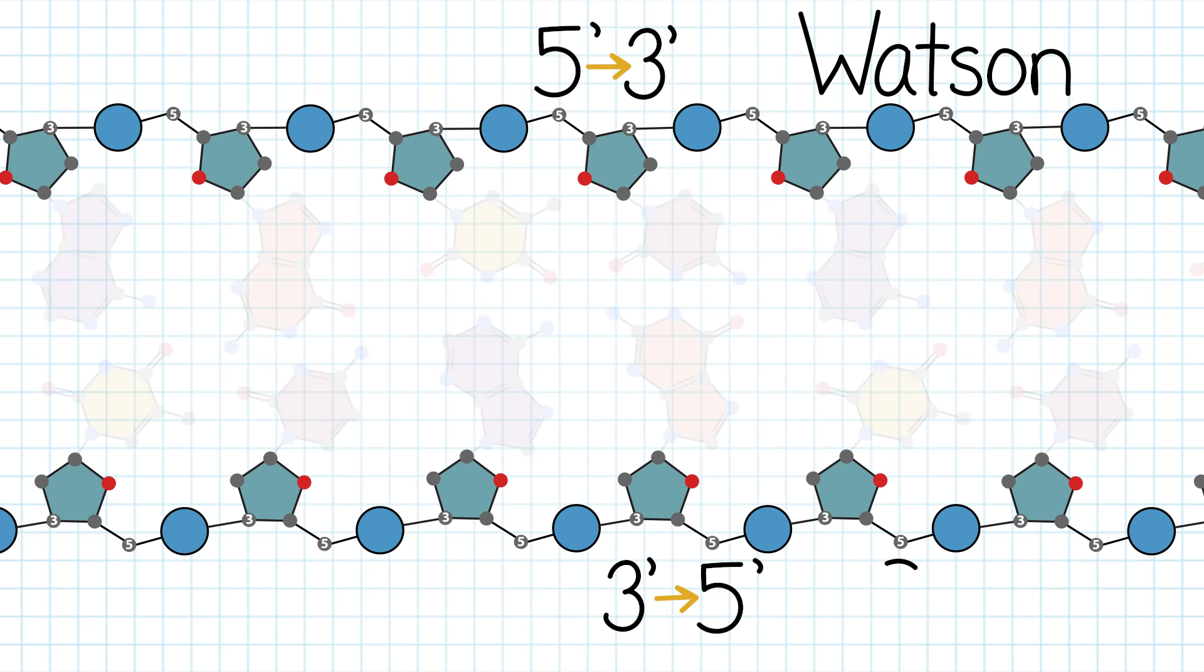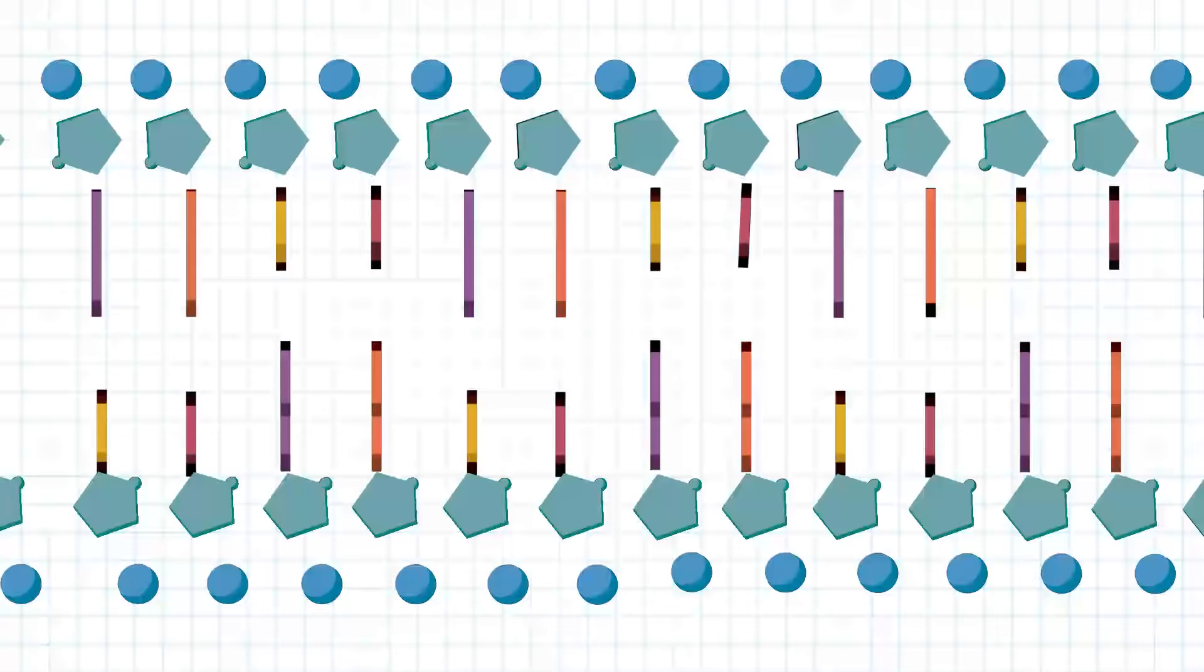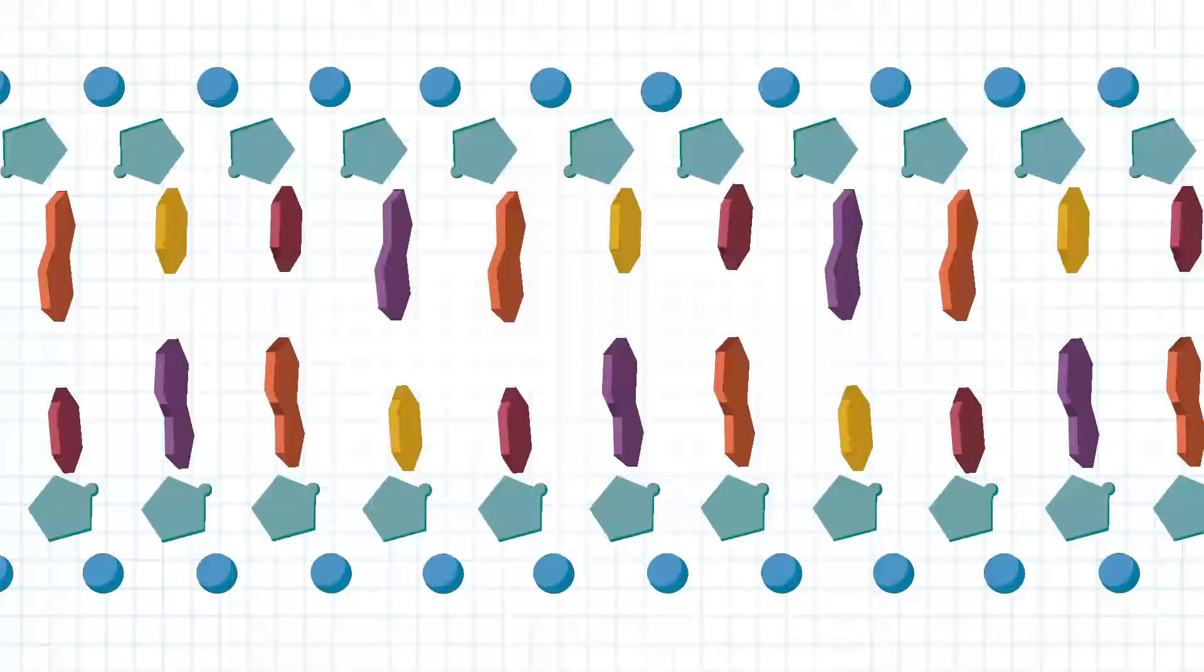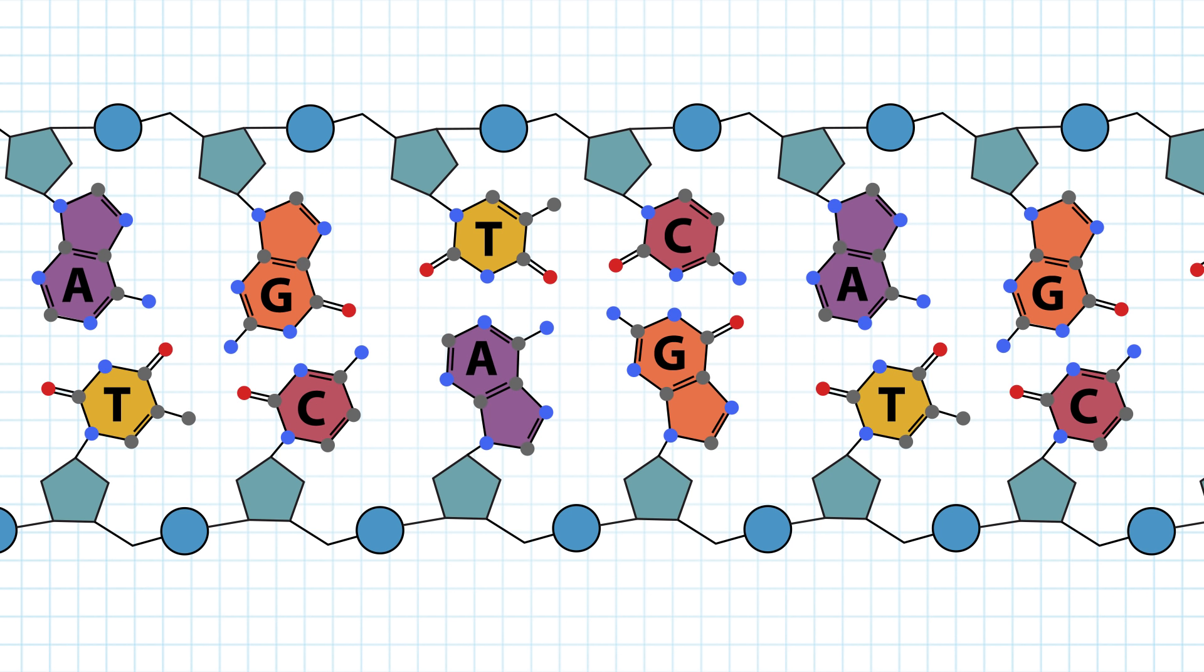These strands are also sometimes called Watson and Crick. Keep in mind that this double-stranded DNA is still a double helix and we have simplified the representation by flattening and unwinding the helix here to better see the atomic structure.